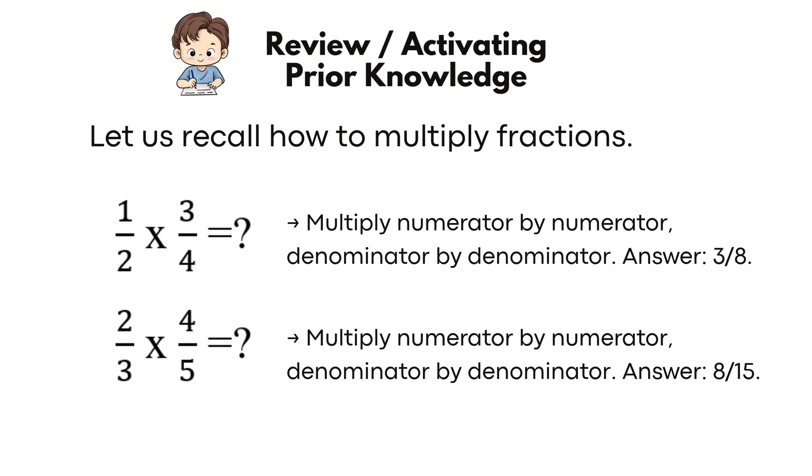For example, 1 half times 3 quarters equals what? Multiply numerator by numerator, denominator by denominator. Answer, 3 eighths.